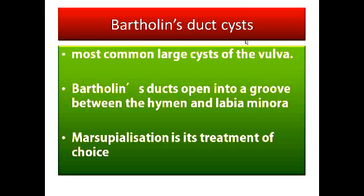Bartholin duct cysts are very important because these are the largest cysts of the vulva. Bartholin ducts open into a groove between the hymen and labia minora. What happens is the Bartholin ducts get blocked due to microorganism proliferation. The secretions of the Bartholin gland, which are normally useful for coitus by keeping the vaginal canal moist, cannot pour out and they form a cyst.